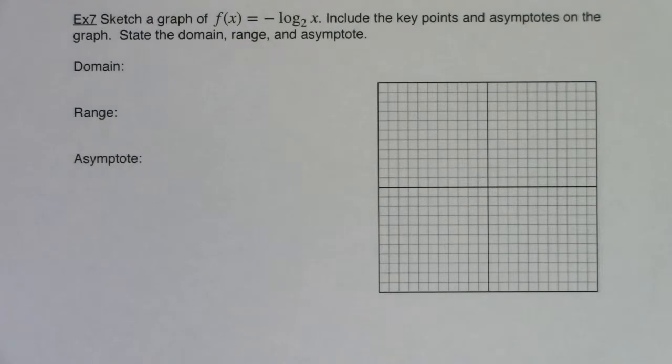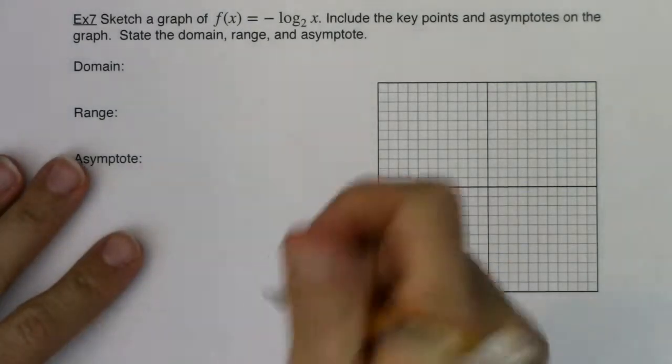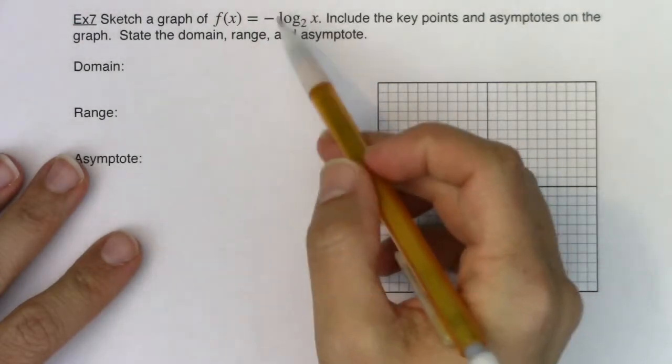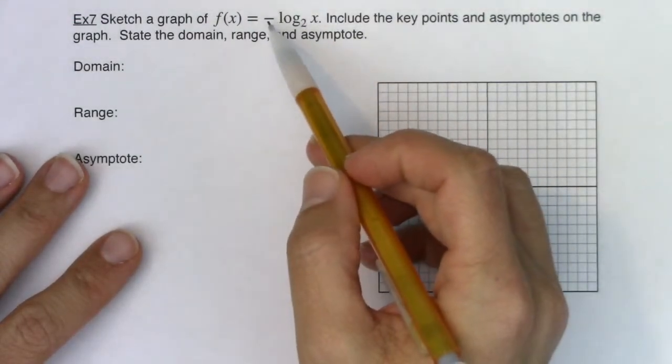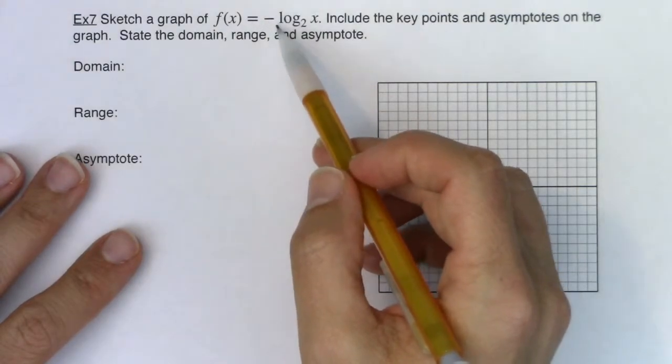Hey Math 31, we're back at it. So let's take a look at example 7. I want you to take note that this function is pretty similar to the function we graphed in example 3, but there's this negative symbol out in front of this.